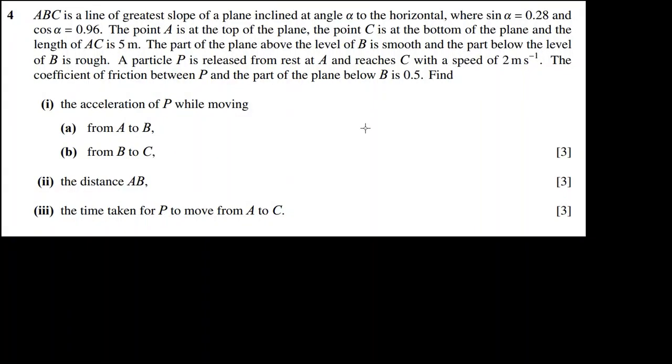Alright, in this question, ABC is a line of greatest slope of a plane. Let me draw that here, inclined at alpha angle. We will draw angle alpha with the horizontal. Sin alpha is 0.28, so this is alpha. And sin alpha equals 0.28. Whenever we need sin alpha, we will straight out put the value without finding the angle. Cos alpha is 0.96. The point A is at the top of the plane, here. And the point C is at the bottom. AC is 5 meters, from C to A is 5 meters.